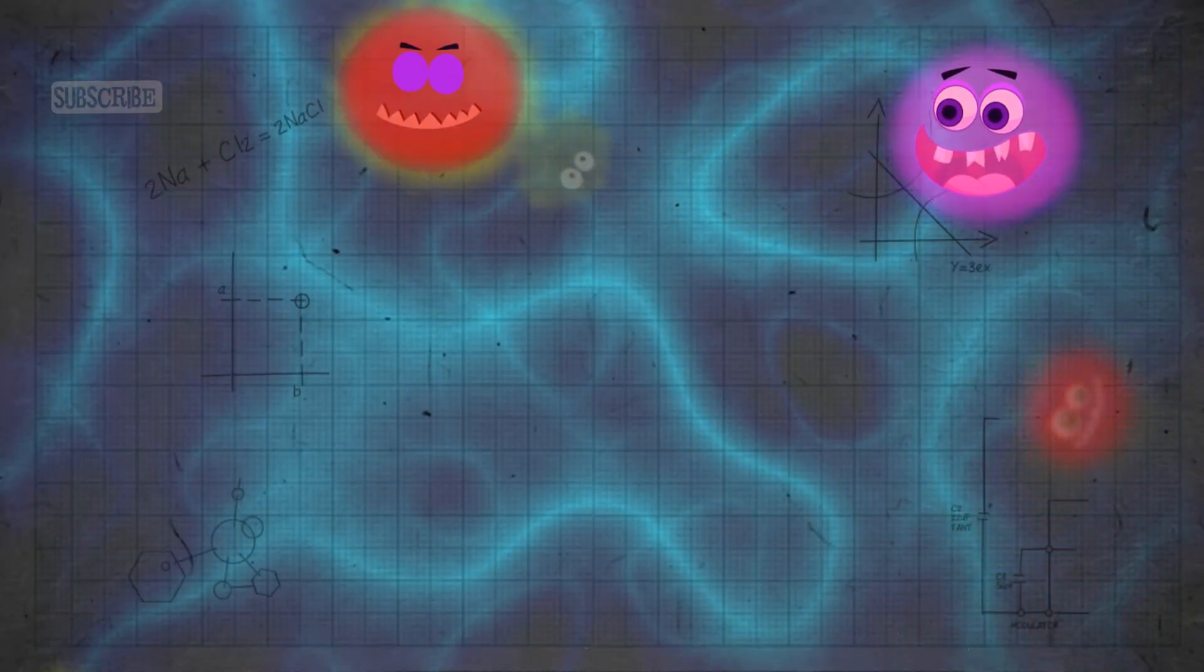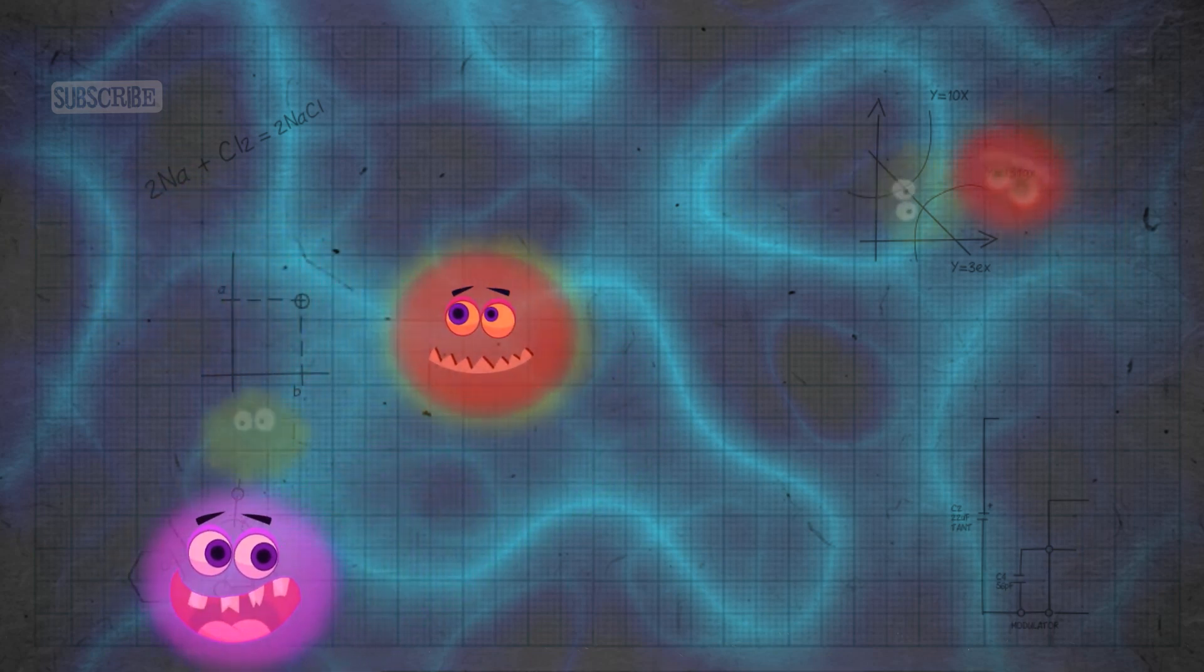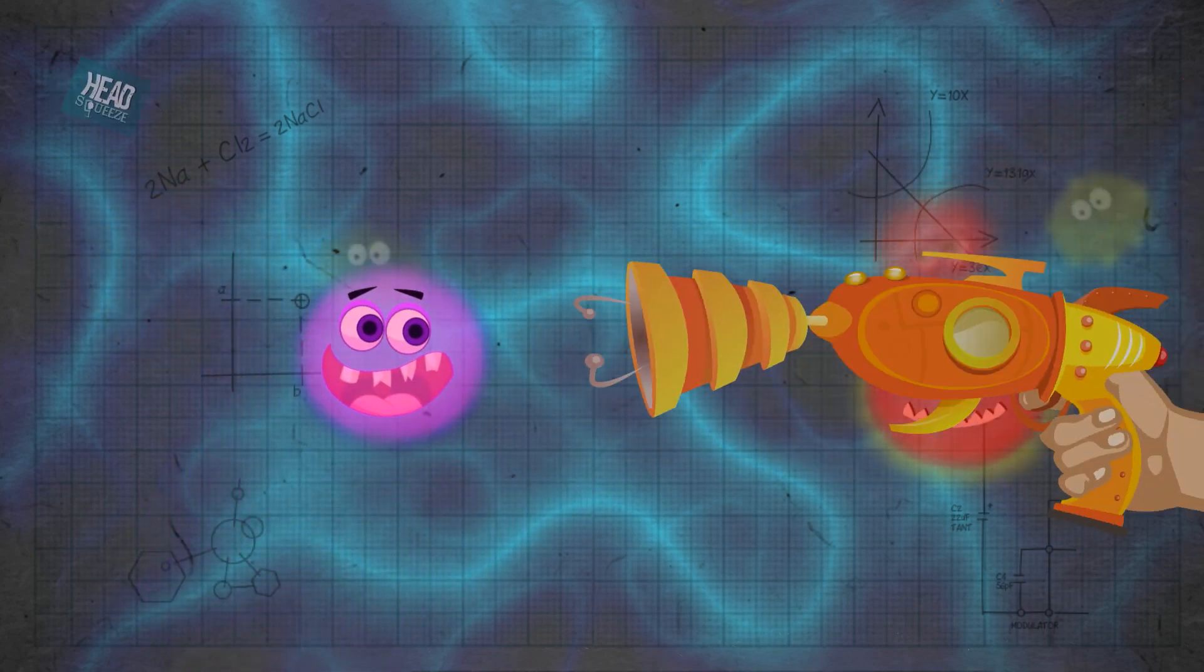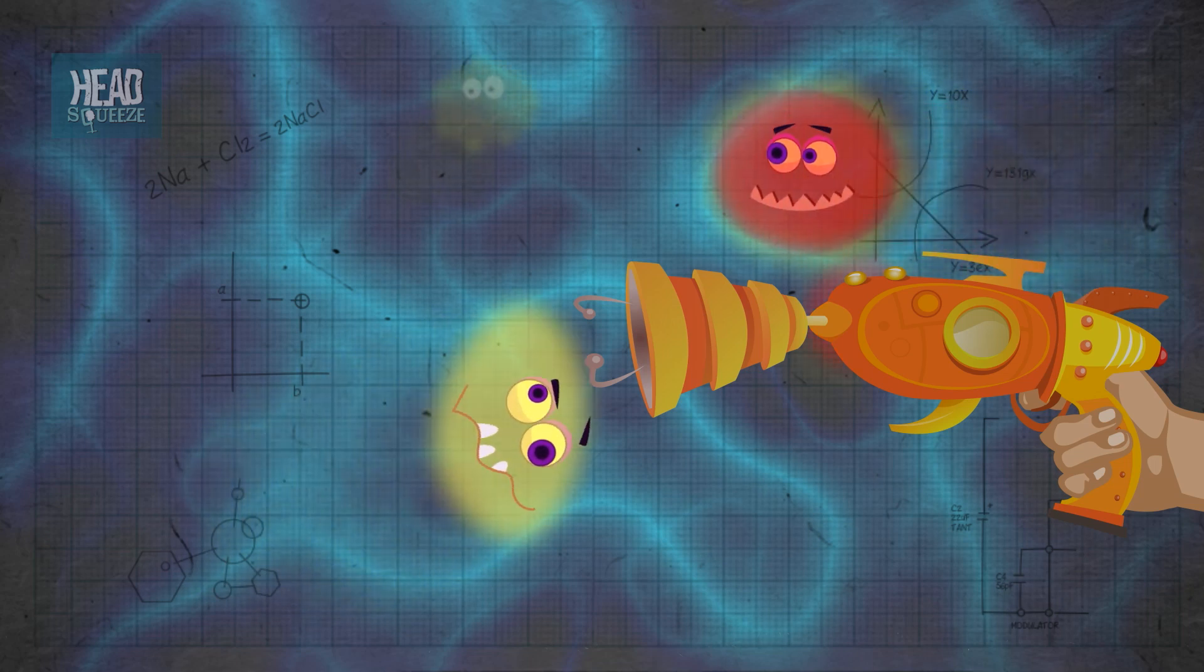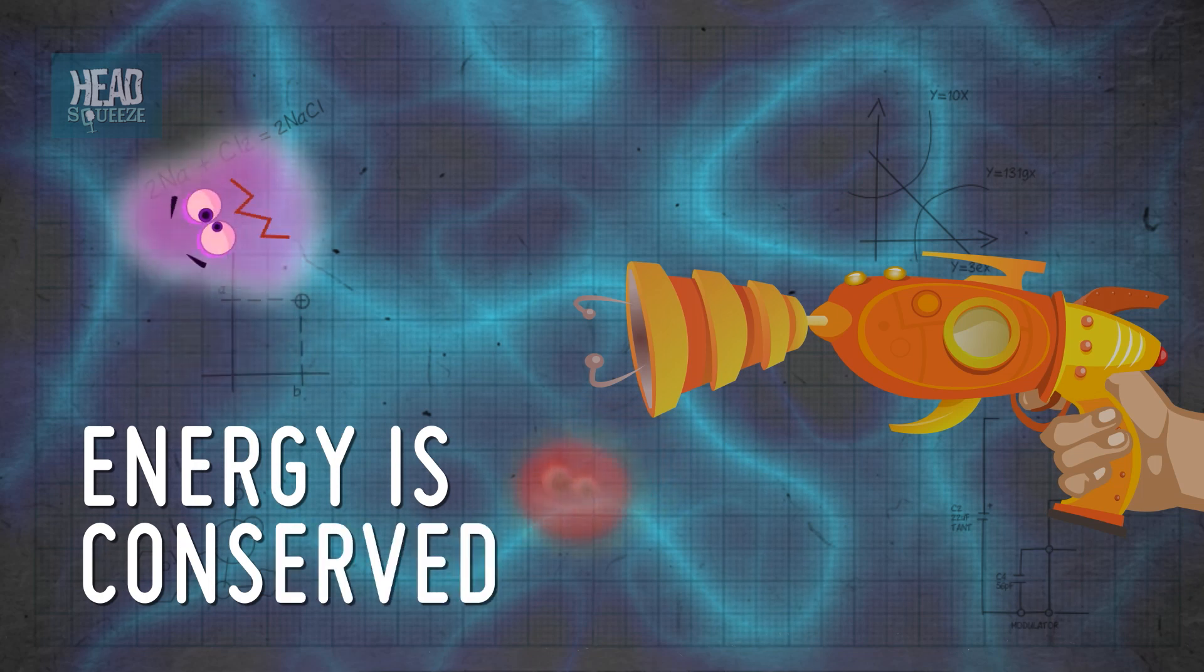Conversely, by giving something energy, you actually increase its mass usually by an immeasurably small amount. So energy comes in loads of different forms and it can change between them. Fundamental to this though is energy can't be created or destroyed. It can only change form. Or as physicists say, energy is conserved.